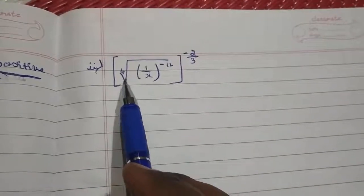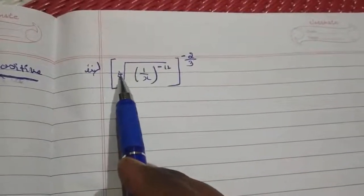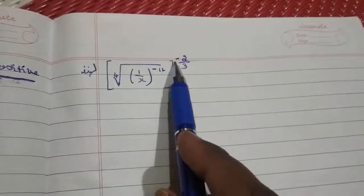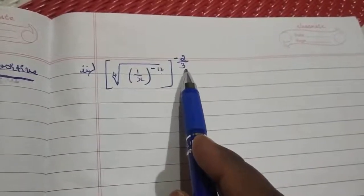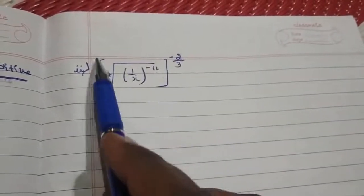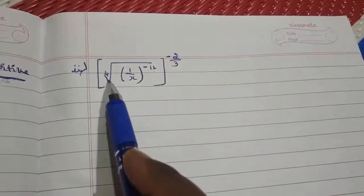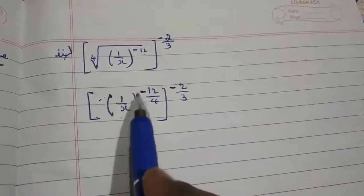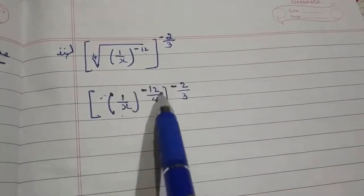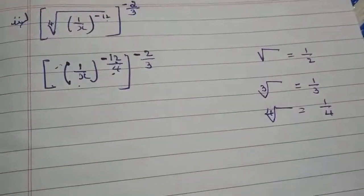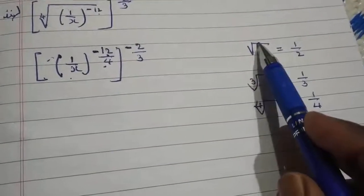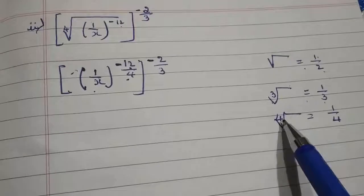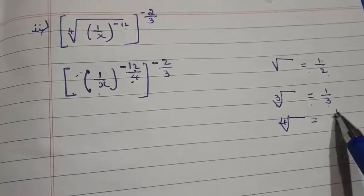Second question: fourth root of 1 by x whole to the power of minus 12, to the power of minus 2 by 3. To simplify, first we will remove the index. It becomes 1 by x whole to the power of minus 12 divided by 4, because we know that square root is nothing but 1 by 2, cube root is nothing but 1 by 3, and similarly fourth root is nothing but 1 by 4.